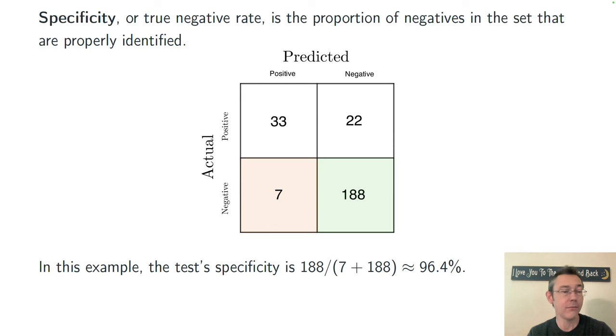There are 195 actual negatives in this example, of which my algorithm has caught 188. So that's 96.4% of the actual negatives that my algorithm is classifying correctly.